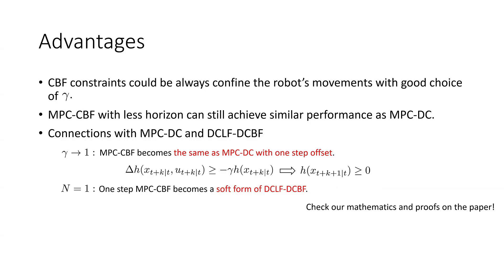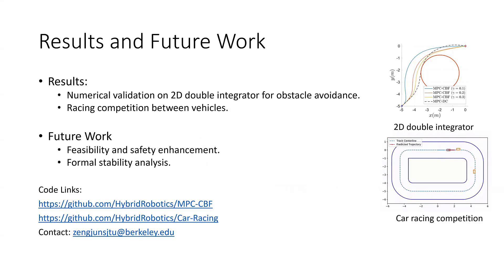We did a formal analysis of feasibility and safety performance, and illustrate these properties with numerical examples: a 2D double integrator for obstacle avoidance, and a car racing competition between vehicles on a closed track. We analyze the connections between MPC-DC and DCLF-DCBF as well. GitHub links for the code are attached for anyone wanting more information.